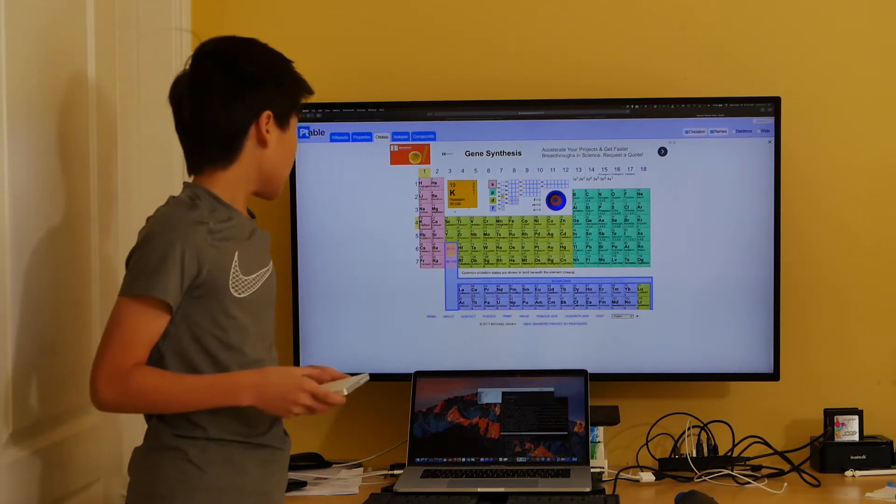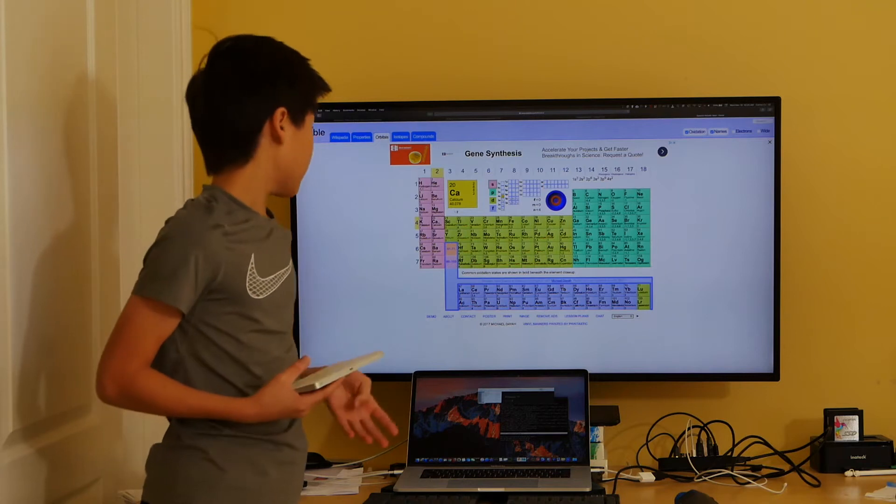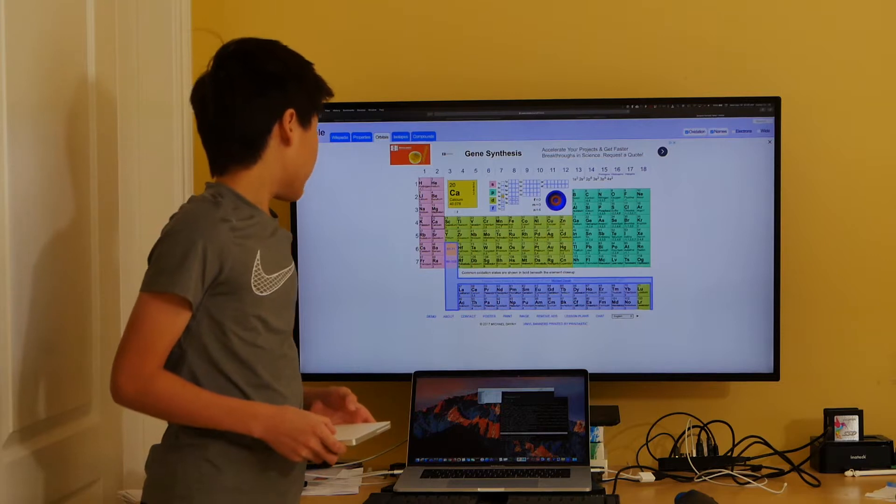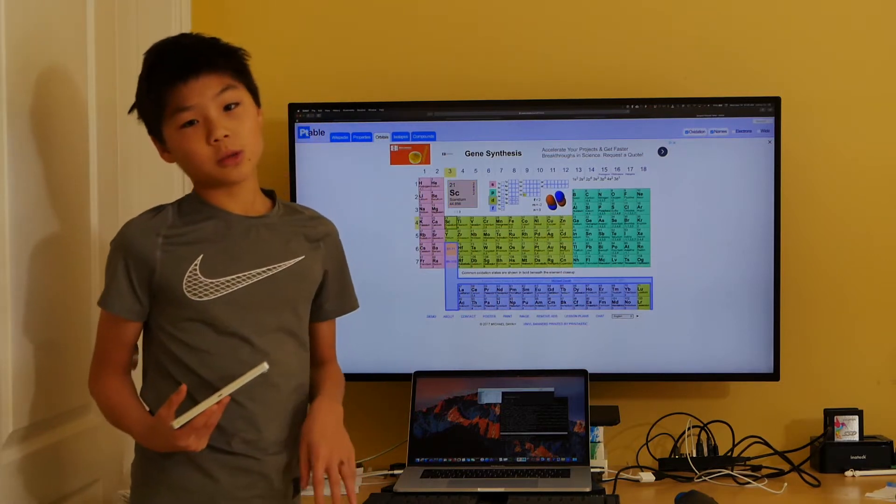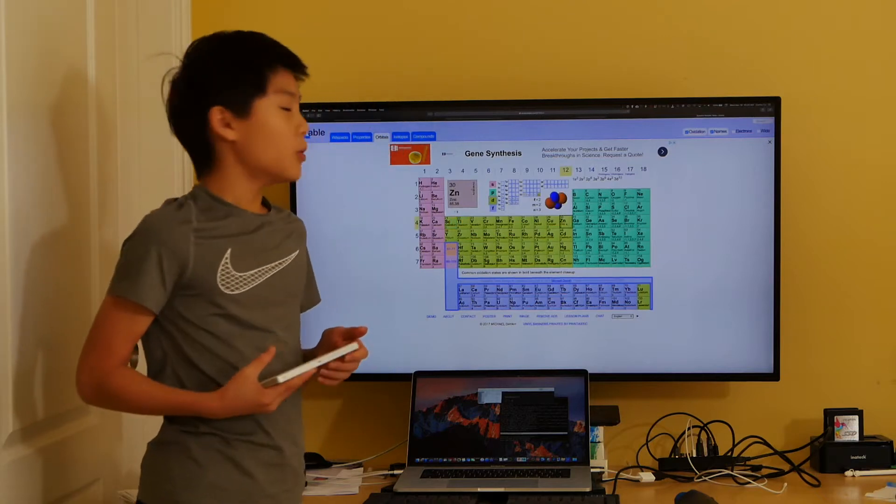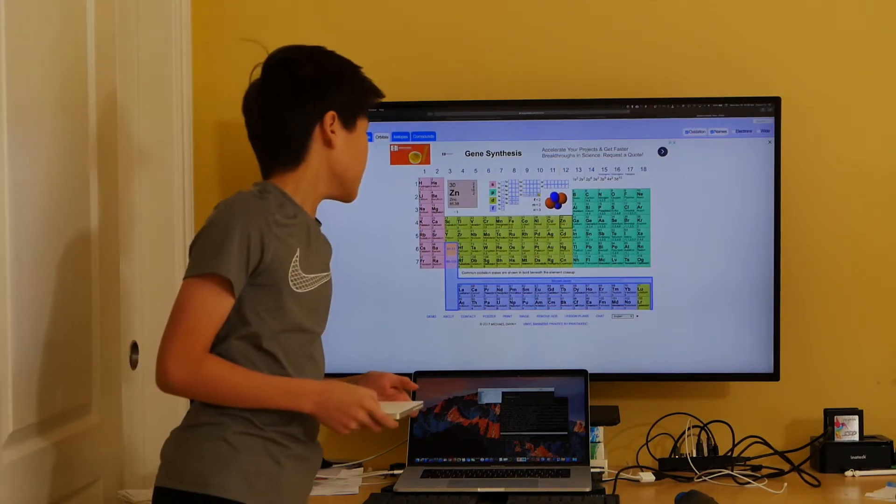Moreover, the next electron of calcium also goes to the fourth shell, giving us 2, 8, 8, 2. It's not until we reach scandium in the transition metal range when the third shell resumes filling until zinc, where the third shell is completely filled with 18 electrons, and the fourth shell resumes filling.